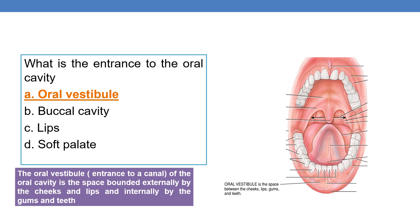Next question: what is the entrance to the oral cavity? Which part of the body is considered the entrance to the oral cavity? The answer is oral vestibule. Oral vestibule is the space between the cheeks, lips, gums, and teeth. Vestibule means entrance to a canal. The oral vestibule is bounded externally by cheeks and lips, and internally by gums and teeth. So the answer is option A, oral vestibule.